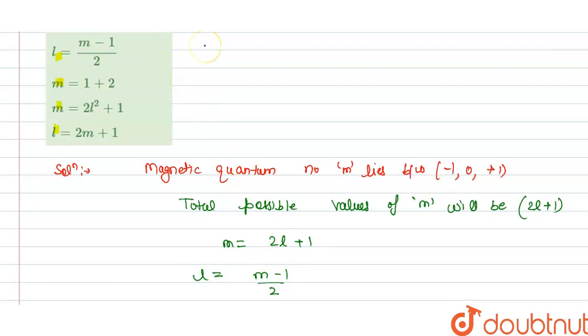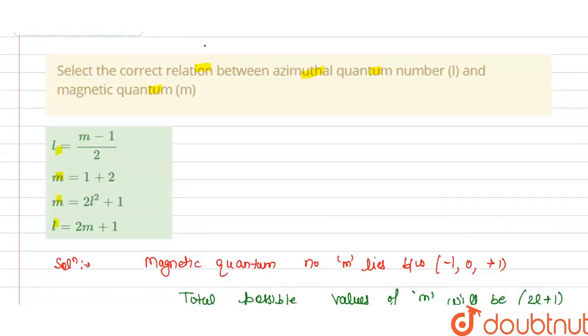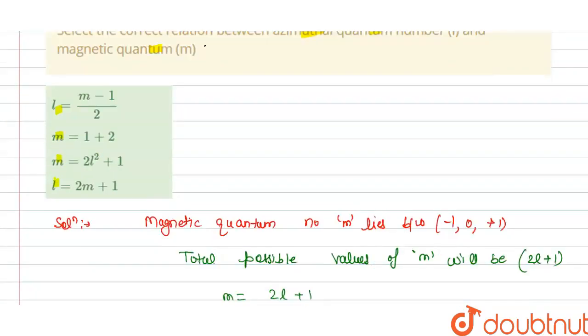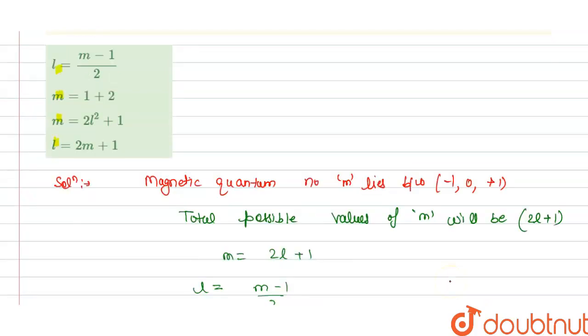So we have L as our azimuthal quantum number. From this we can say that azimuthal quantum number L equals M minus 1 divided by 2, and this is the answer.